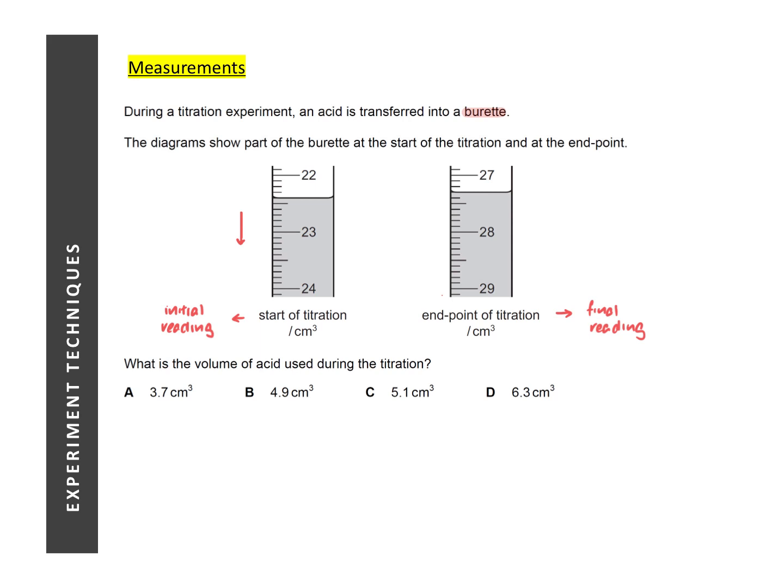In this question we are given two snapshots of the buret at the start and at the end of the titration, which corresponds to your initial reading and your final reading. Bearing in mind as we go down the number increases, the initial reading would be 22.4 centimeter cube and the final reading would be 27.3 centimeter cube.